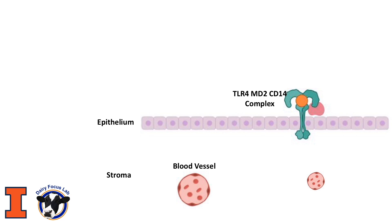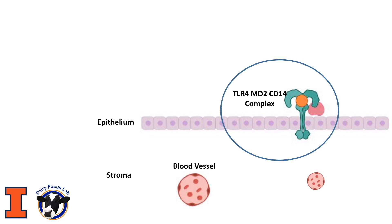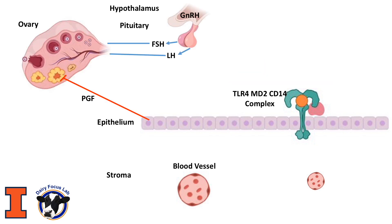I will provide this reference in the comments as well. Here we have the uterine epithelia, which is already a defense mechanism as it forms a barrier to stop the entry of pathogens. Here we can see an example of a TLR4-MD2-CD14 complex, which recognizes pathogen-associated molecular patterns, but it can also recognize other molecules such as NIFA. Here's the stroma and some blood vessels, and here on the left corner we have the representation of an ovary with a follicular wave developing, following to ovulation and development of a corpus luteum.